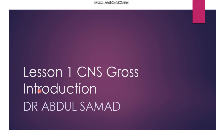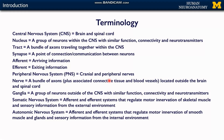We are going to start our series of neuroanatomy with a very basic lecture in which we'll be talking about common terms that will be used all across this series. The central nervous system, or CNS, is actually the brain and spinal cord — you are very much familiar with it.